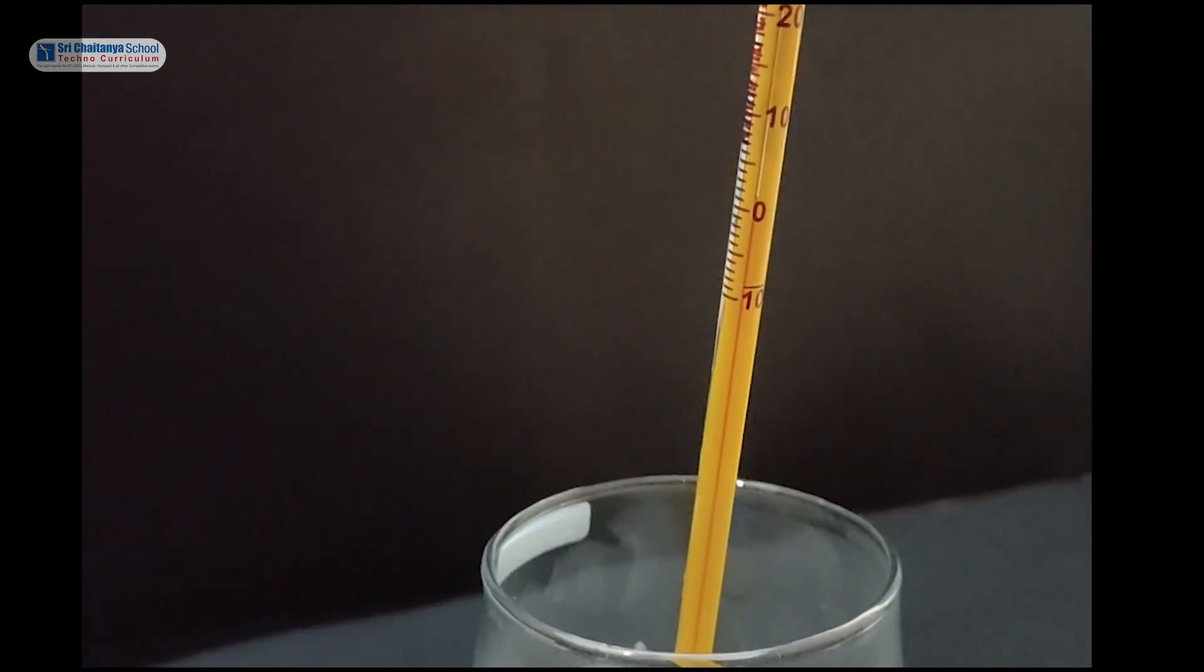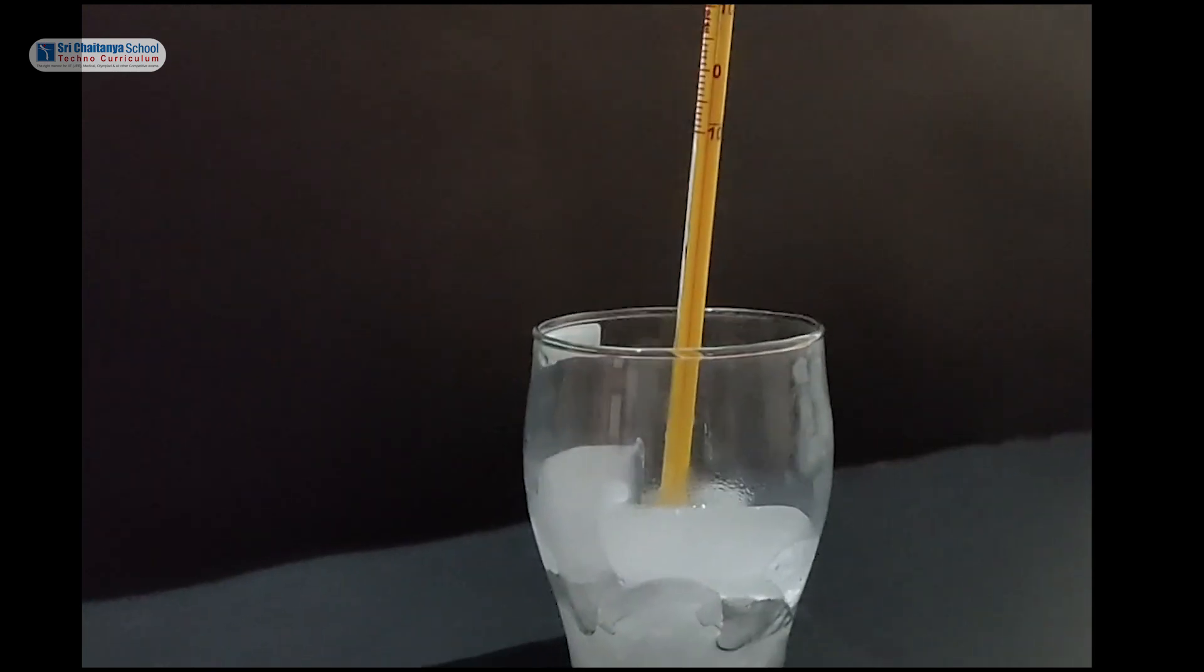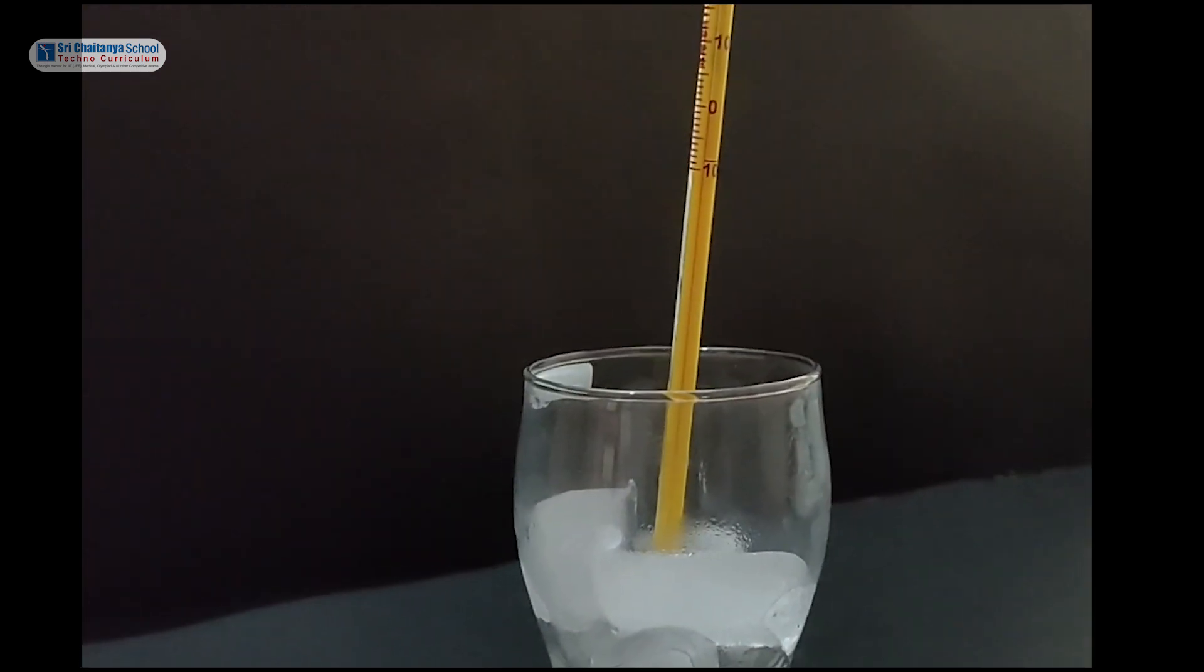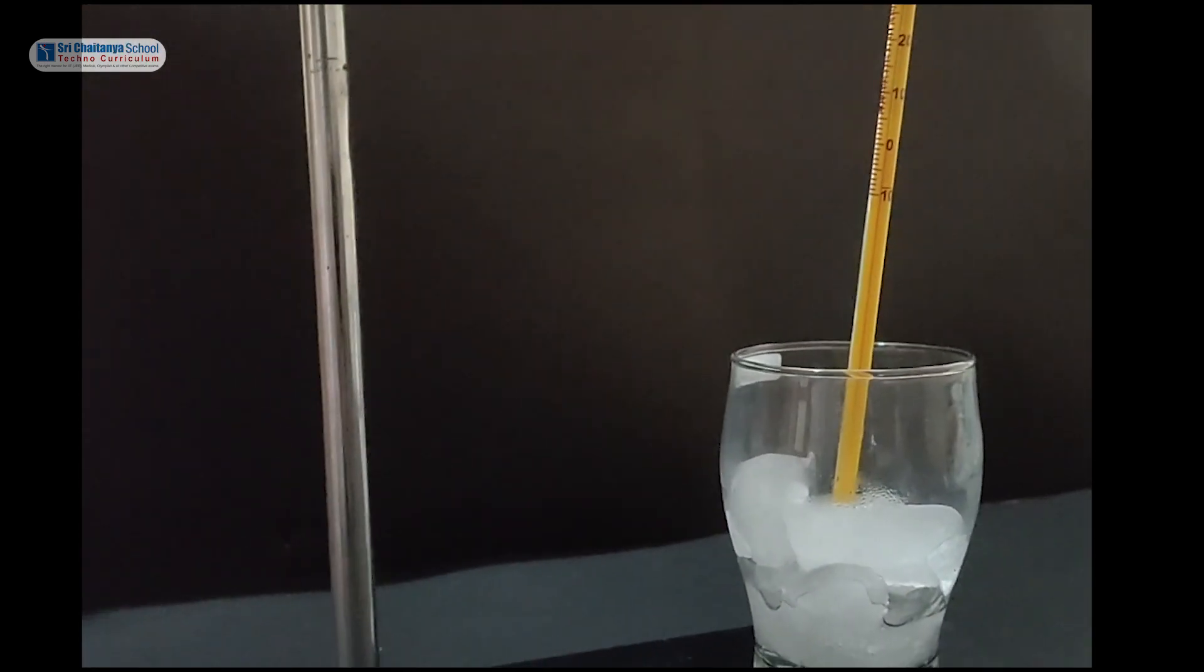Leave the apparatus for few minutes and observe the level of mercury in the thermometer. When the level of mercury is stationary, record the temperature. This temperature is melting point of ice.